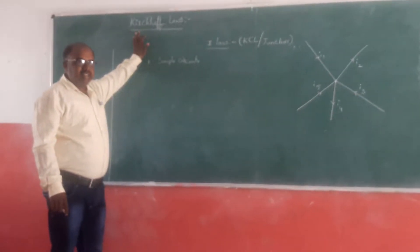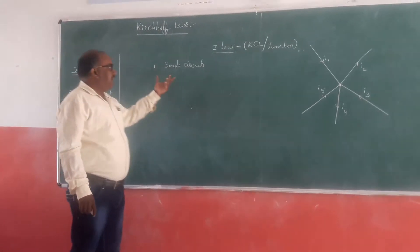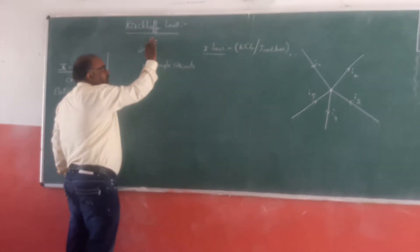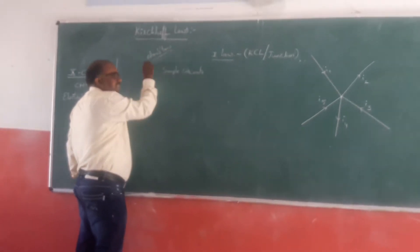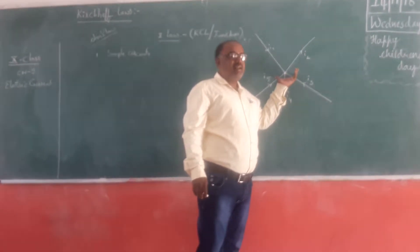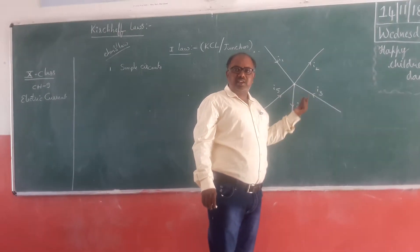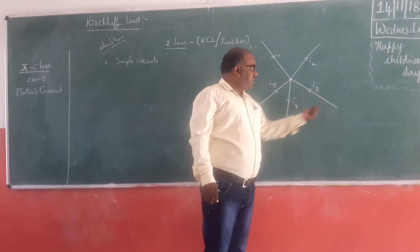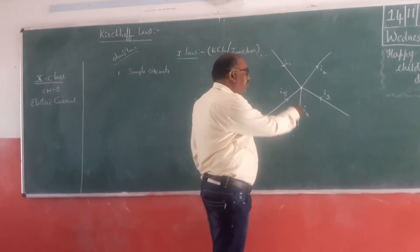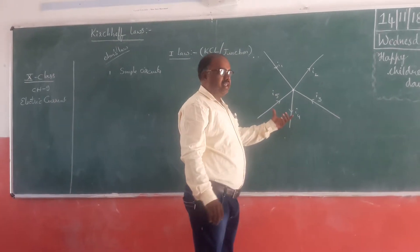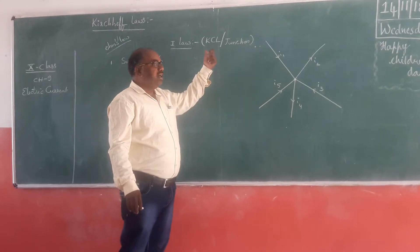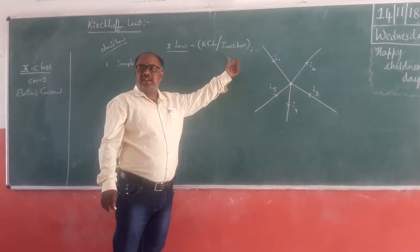Where exactly do we use Kirchhoff's laws? We know that there are so many limitations in Ohm's law — Ohm's law is not valid for complex circuits. A complex circuit means a circuit that consists of more than two consumers. For these kinds of complex circuits, to find the flow of current at the junction, Kirchhoff introduced one more law, called Kirchhoff's Current Law, or the Junction Law.